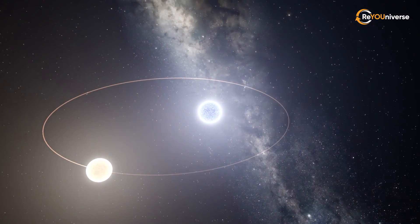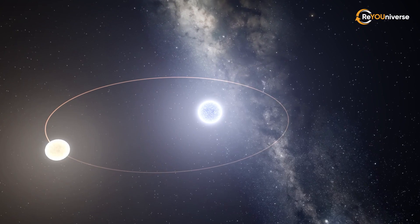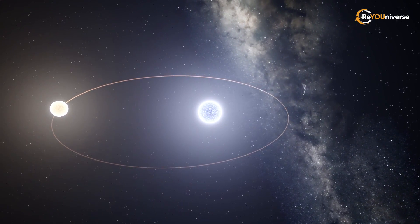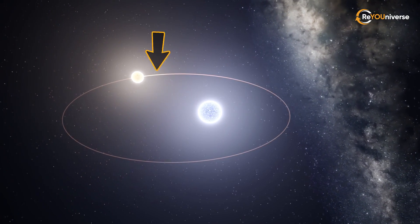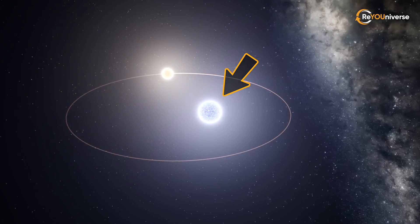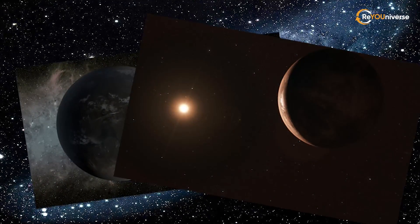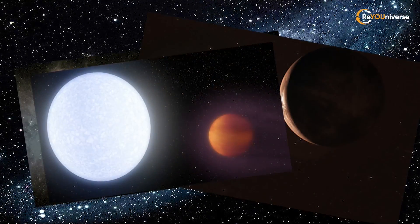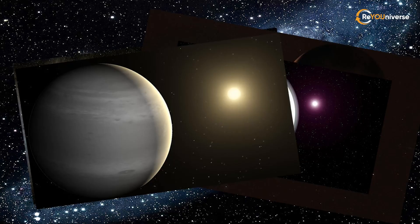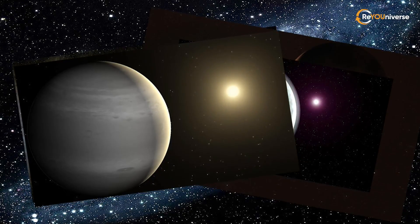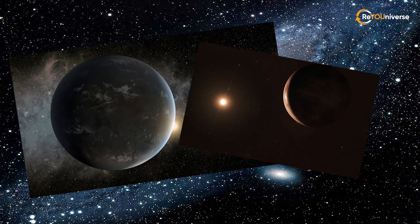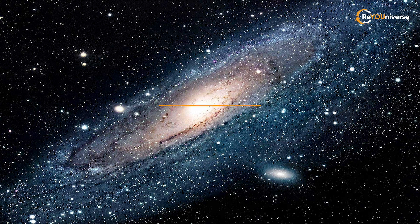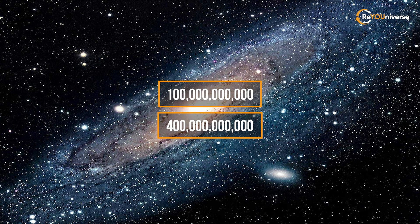Lastly, there are also stellar systems that have no planets in them, but rather smaller stars orbiting a bigger star. All of these facts determine the star-to-planet ratio in our galaxy. Based on this, scientists estimate that the Milky Way harbors about the same number of planets — from 100 to 400 billion.